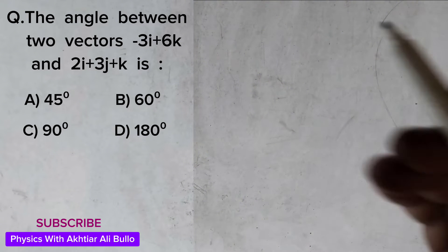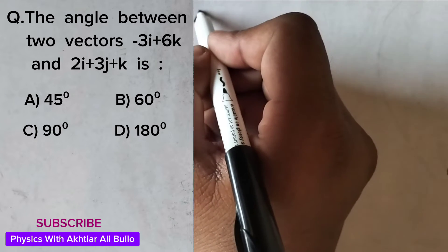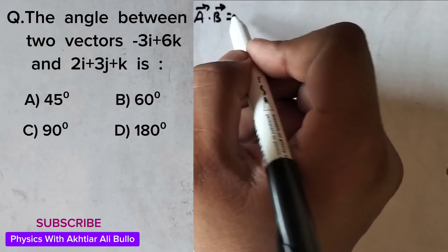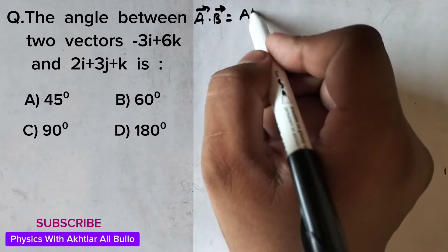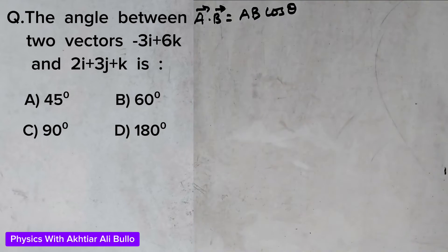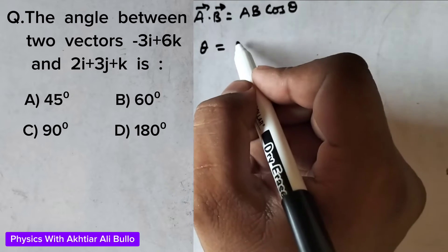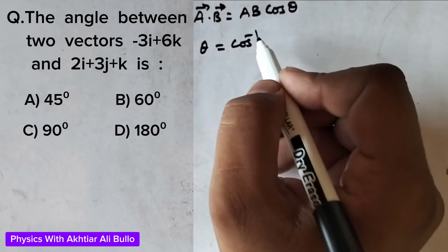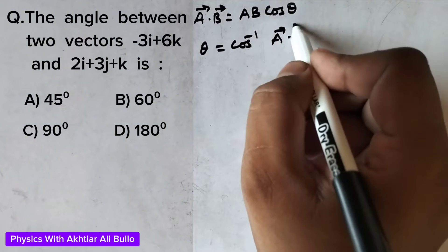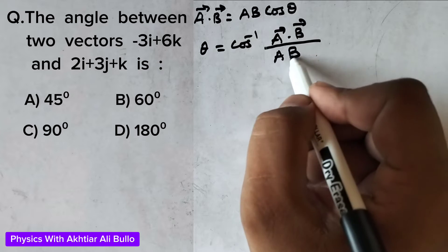The formula is: a dot b equals a times b times cos theta. Rearranging for theta, the formula becomes cos inverse of (a dot b) divided by the magnitude of a times the magnitude of b.